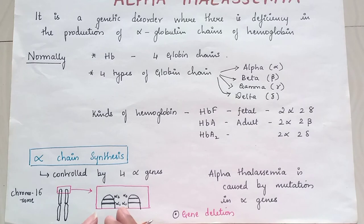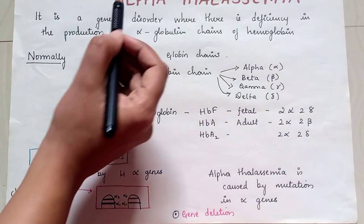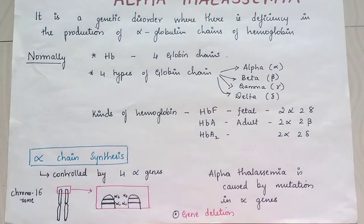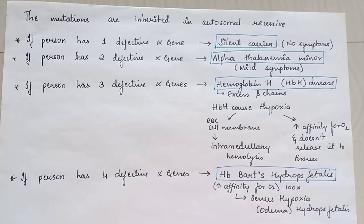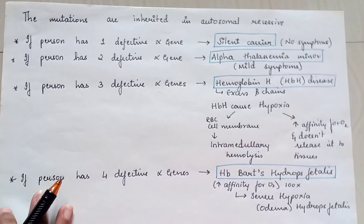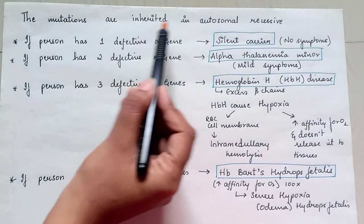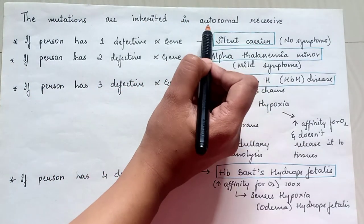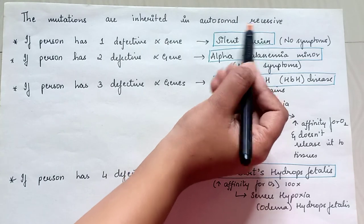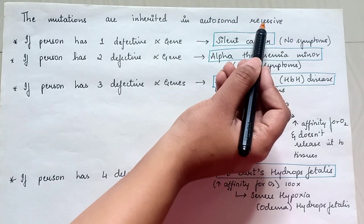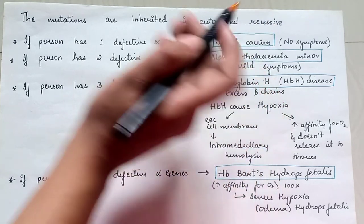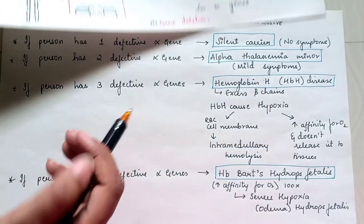Alpha thalassemia is caused by mutations in the alpha genes. These mutations are inherited in an autosomal recessive pattern, which means both parents should be carriers.